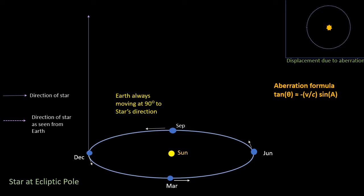If we take an example, let's consider a star which is at right angles to the Earth's orbit. We call this location the ecliptic pole. And as you can see from the diagram, the star is always at 90 degrees to the direction which the Earth is moving around the Sun. So the angle A in the formula is always 90 degrees.